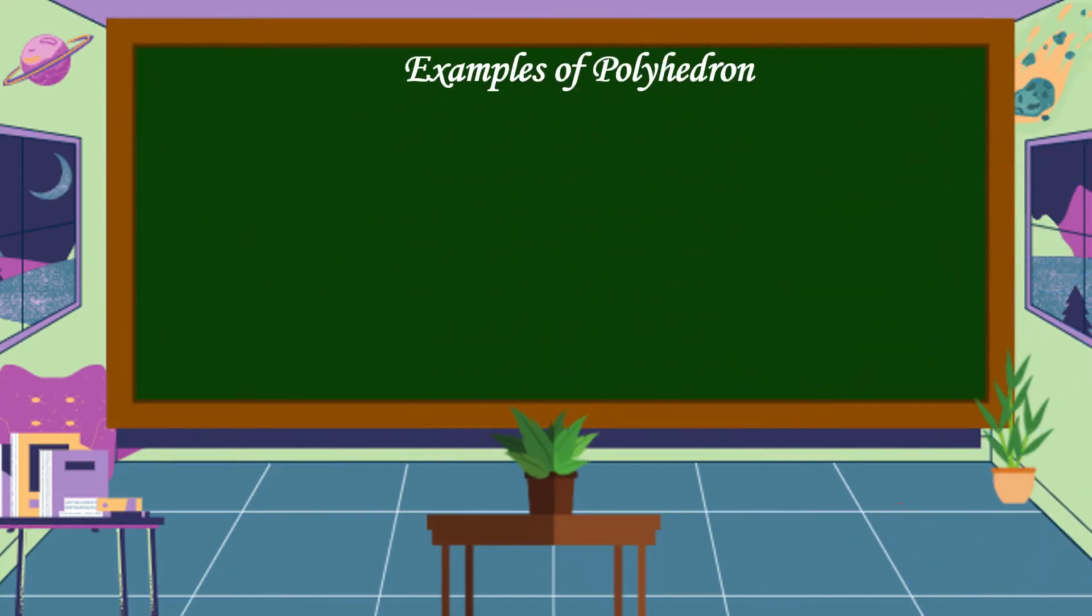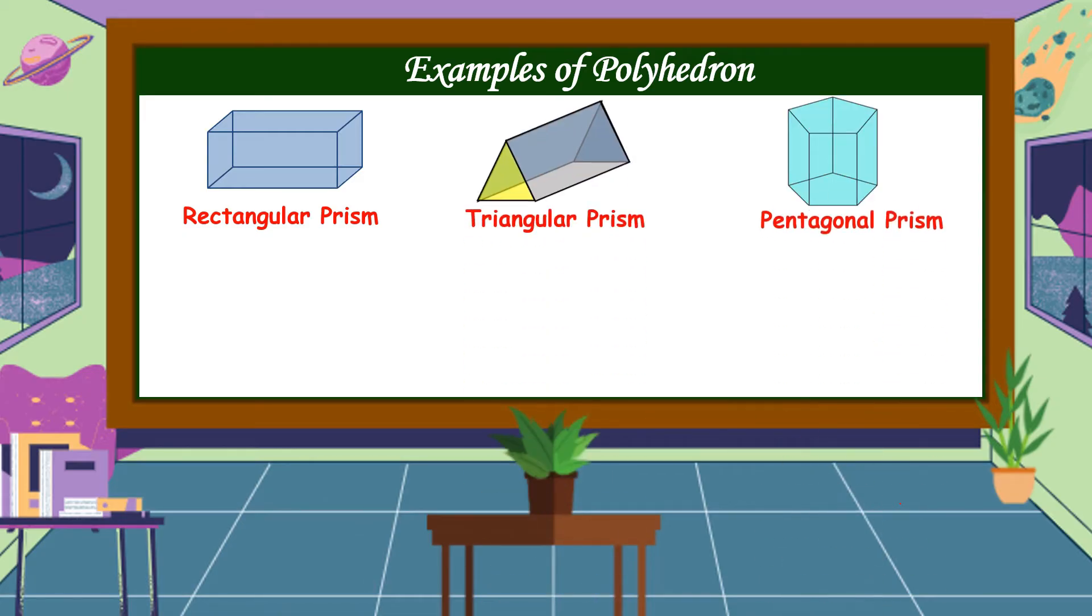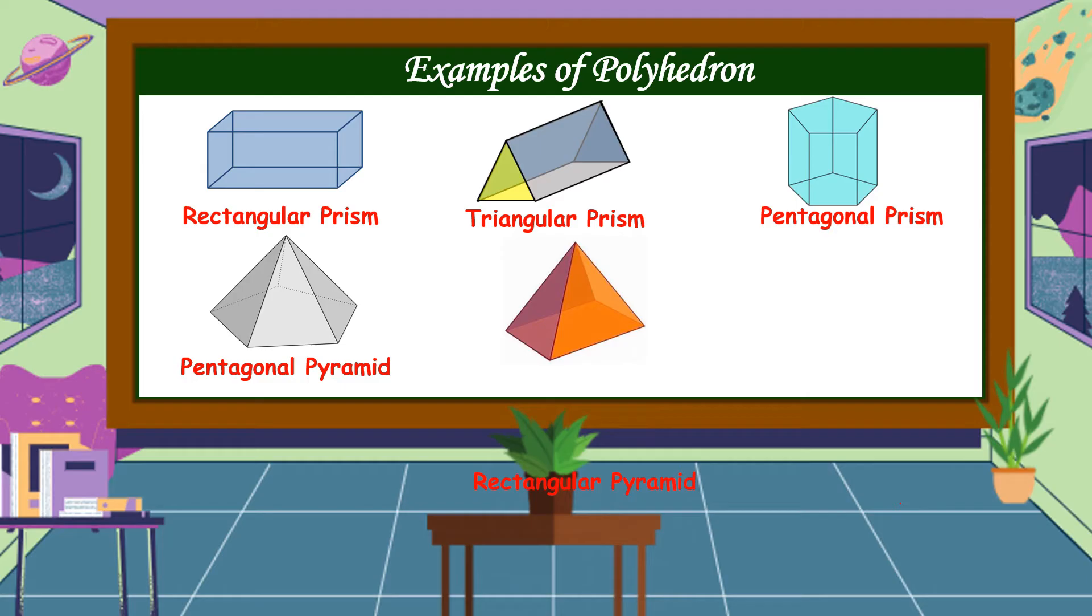Here are some examples of polyhedron. We have rectangular prism, triangular prism, and pentagonal prism. We also have pentagonal pyramid, rectangular pyramid, and hexagonal pyramid.